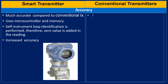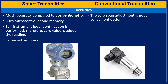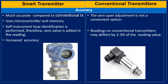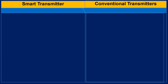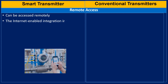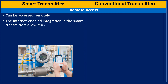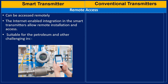In conventional transmitters, zero span adjustment is not a conventional option due to their analog nature. Therefore, the reading of conventional transmitters may deflect by 2 to 3% of the reading value. Smart transmitters can be accessed remotely — internet-enabled integration allows remote installation and access, making them suitable for petroleum and other challenging industries. Conventional transmitters cannot be accessed remotely.